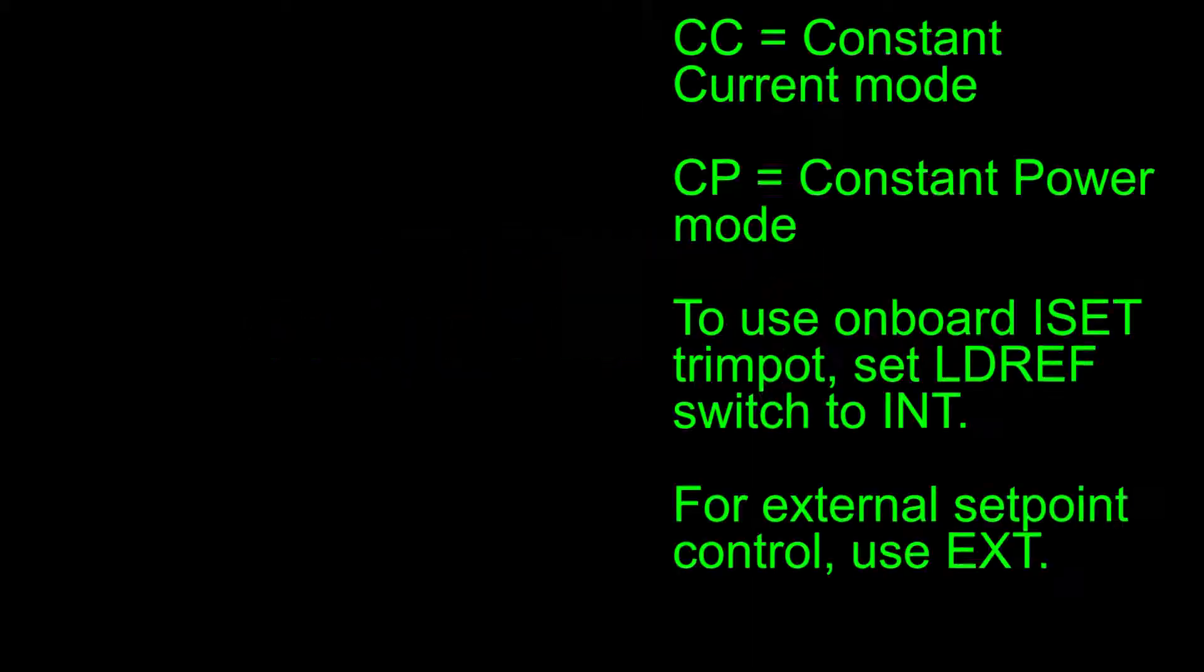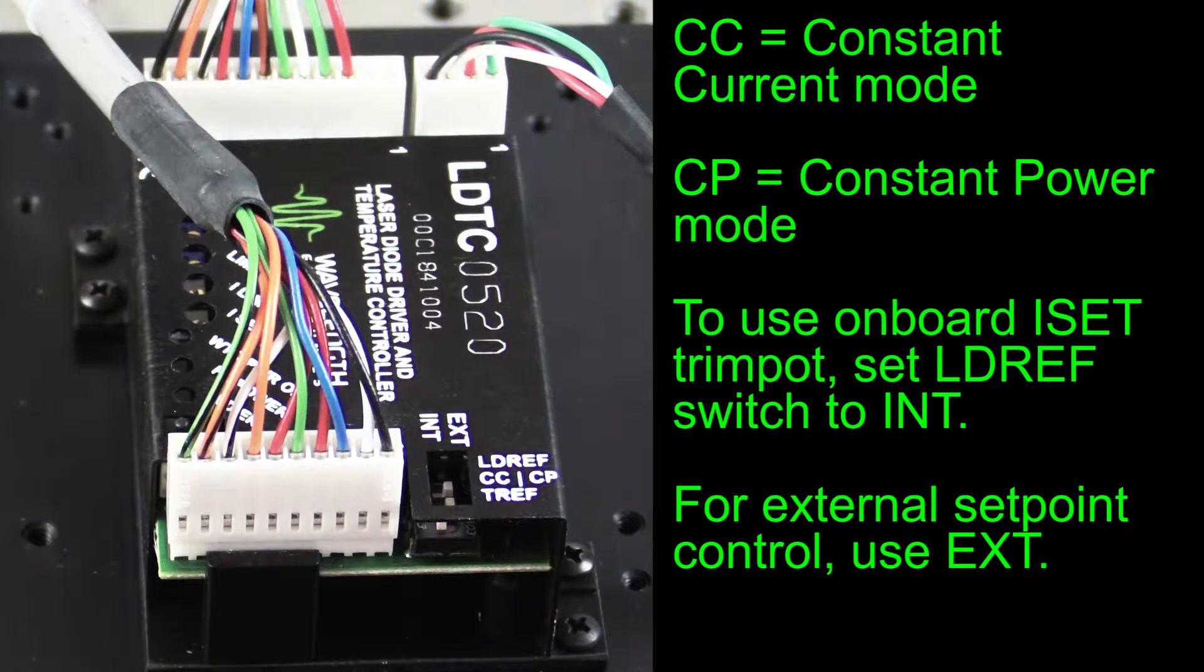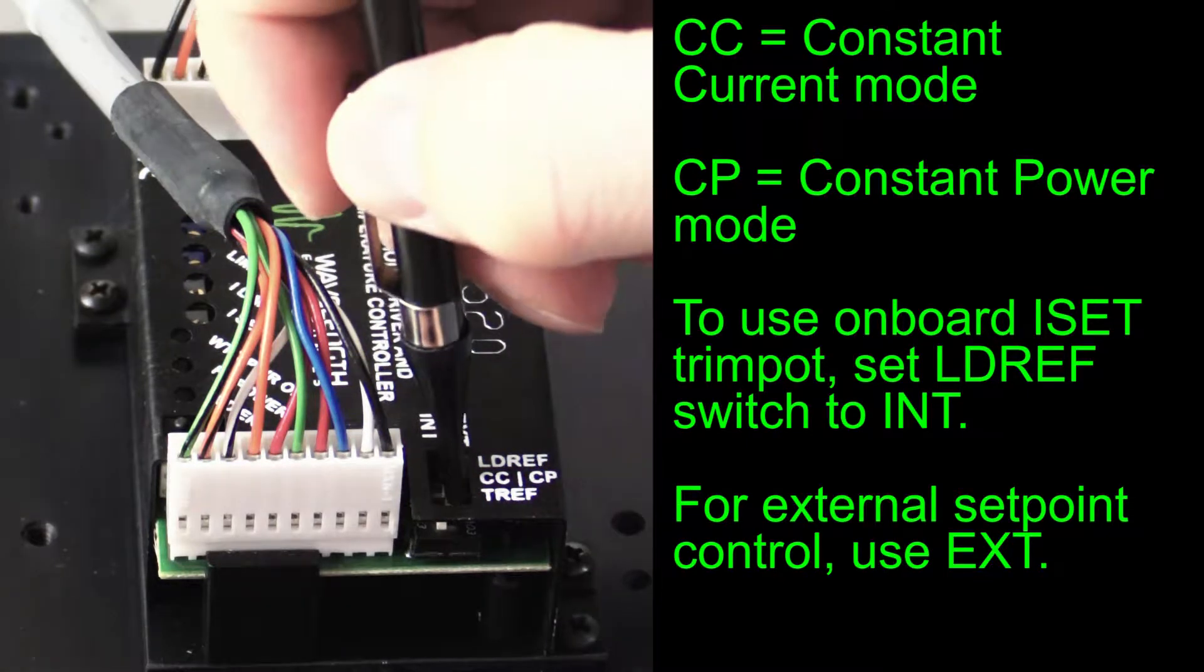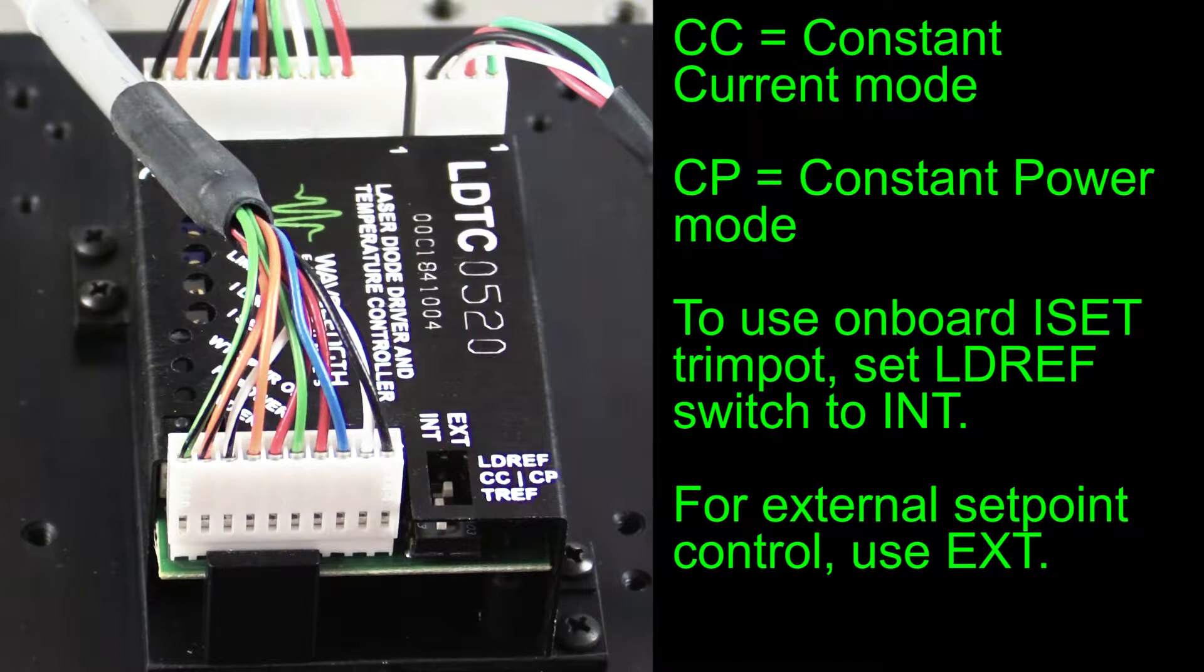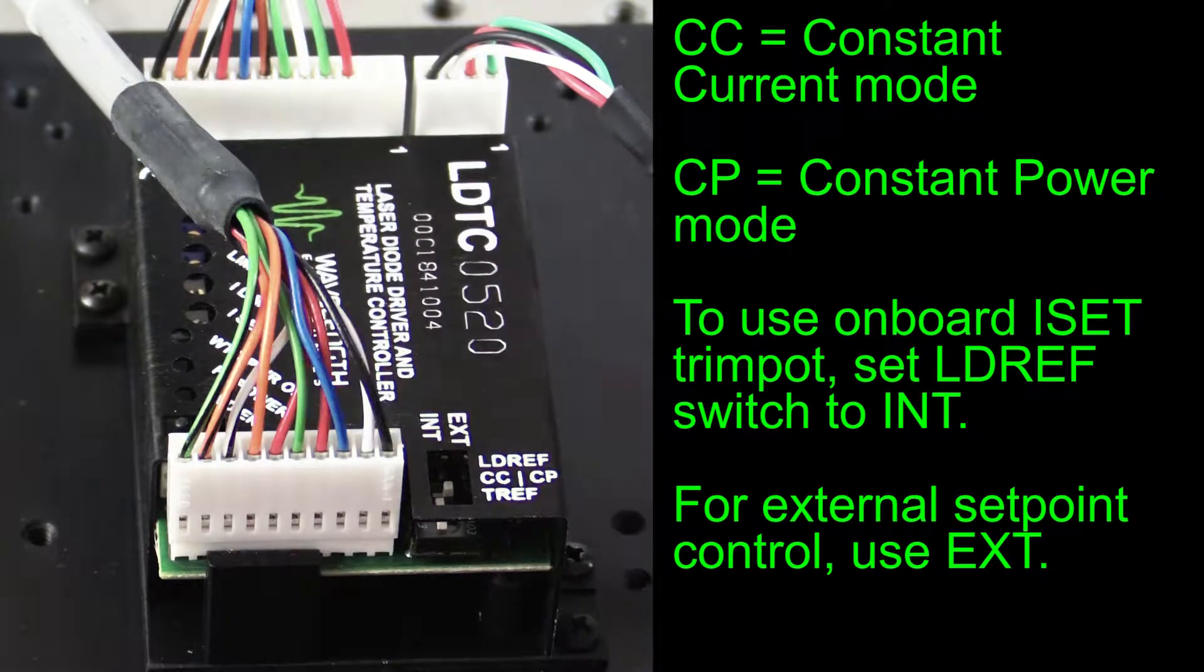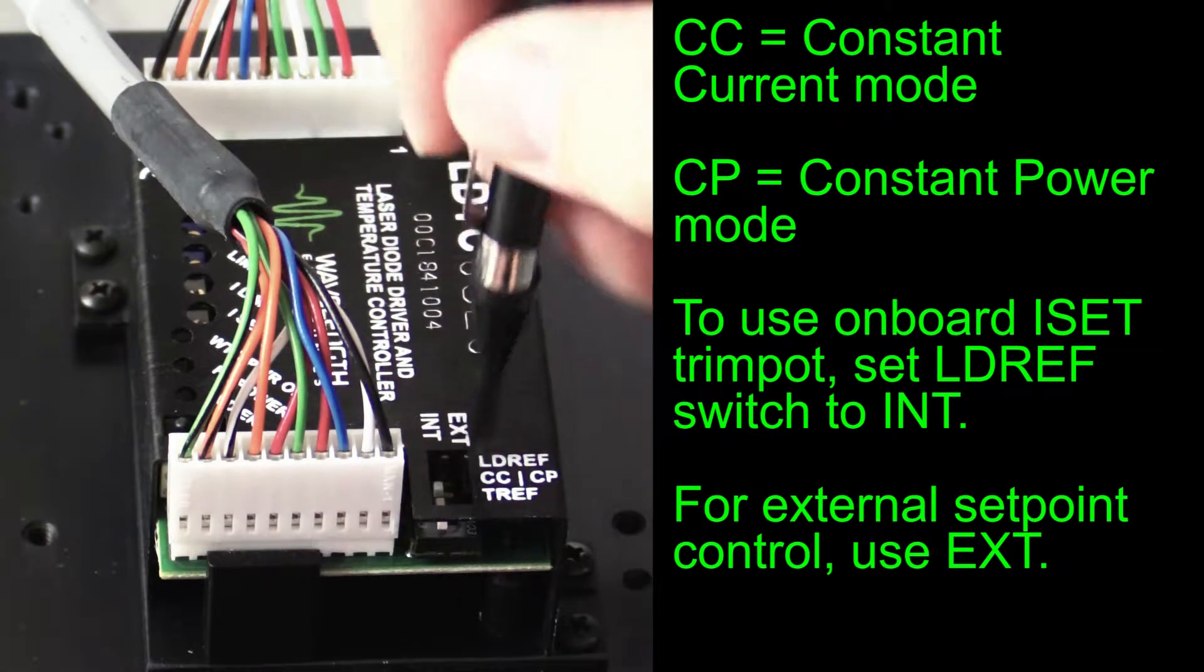With the temperature control configured, we are now ready to turn to the laser diode driver circuit. The current limit is initially set with the driver in constant current mode. Set the mode switch to CC. Then, set the reference source for the laser current set point. We will use the onboard ISET trim pot, so the LD Ref DIP switch must be set to internal.